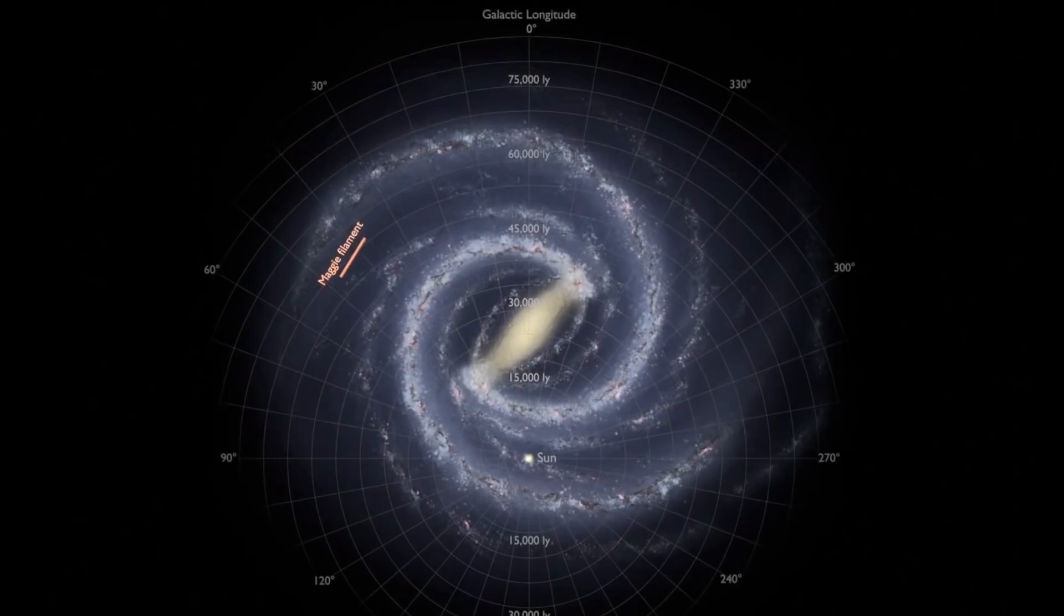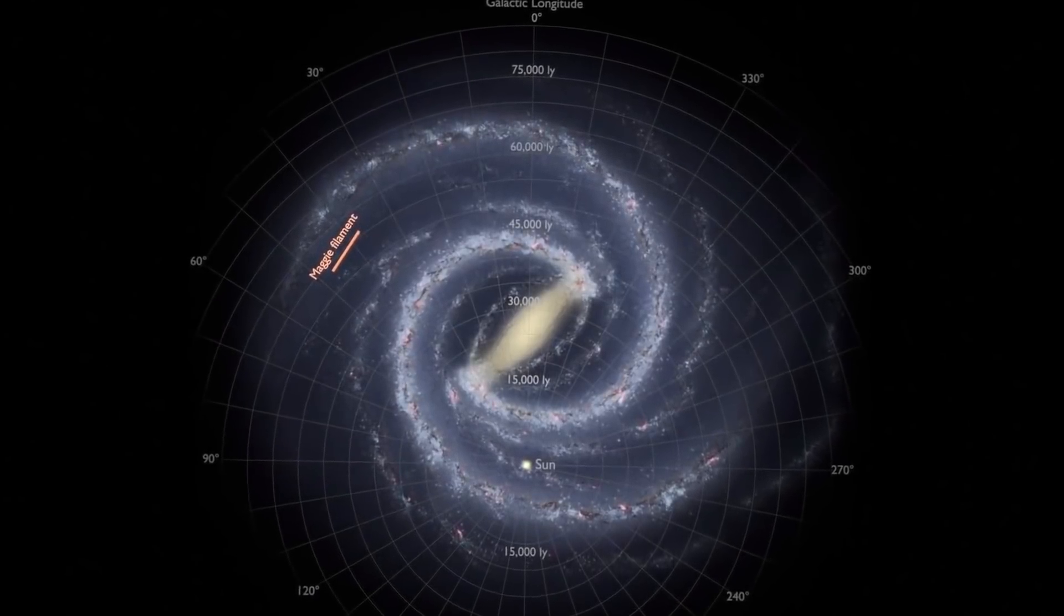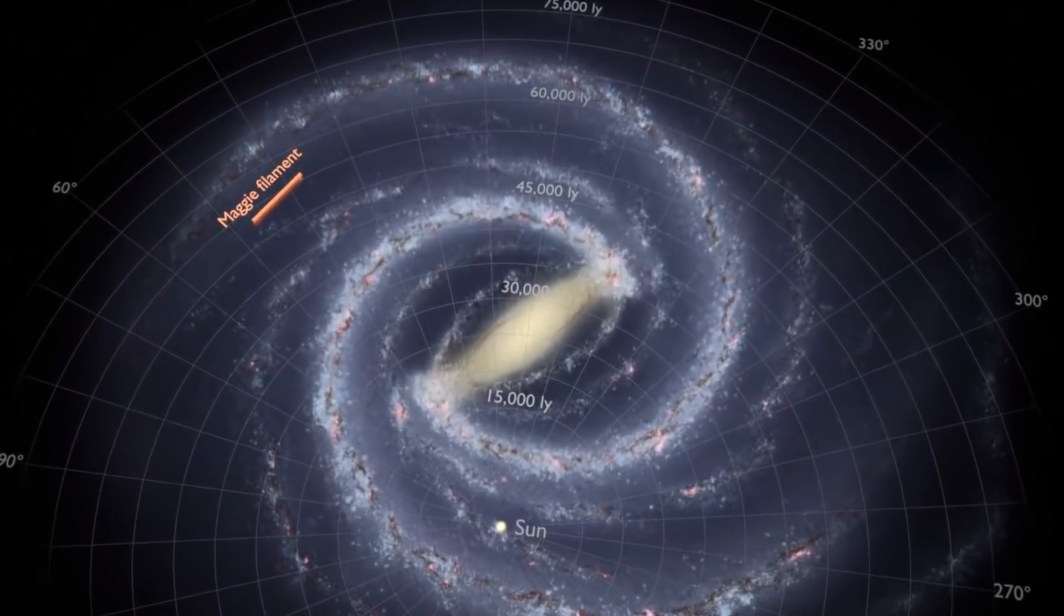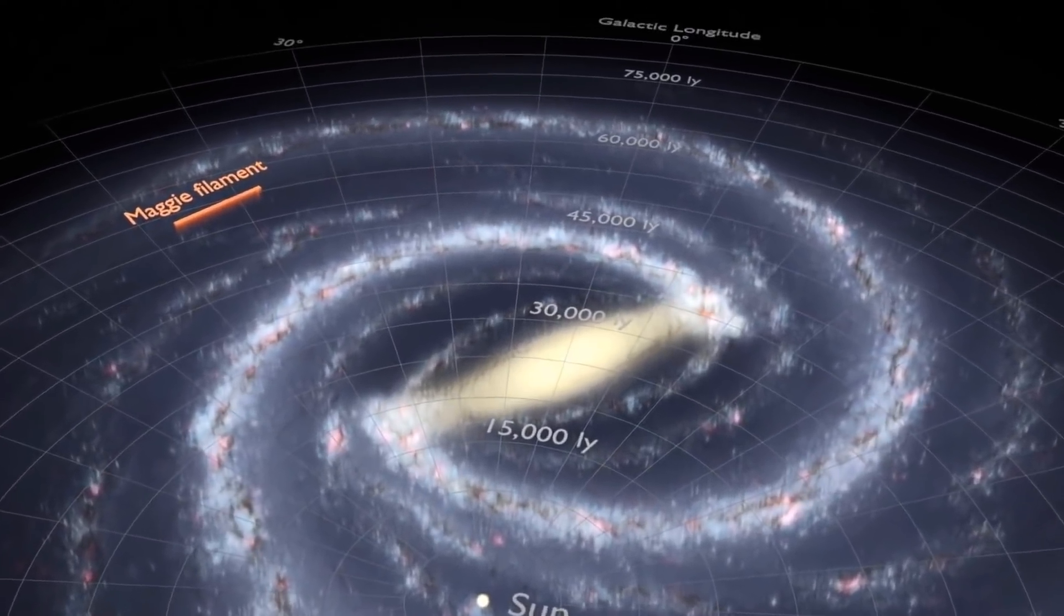But this time the scientists have found another unusual structure, and potentially the largest structure we've found in the last few years. They refer to it as MAGI, MAGI filament technically. You can kind of see it right there, and this is where we're located.